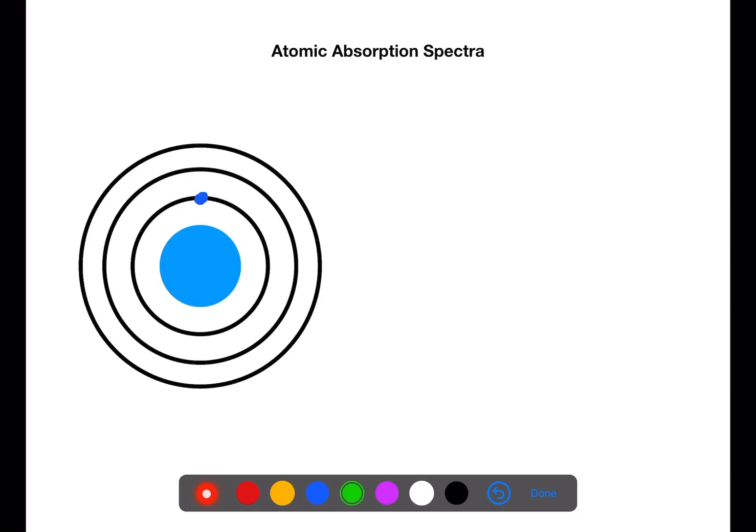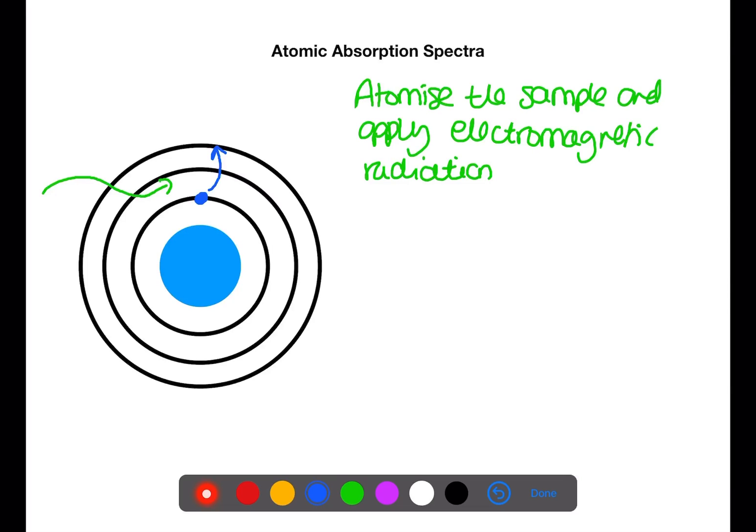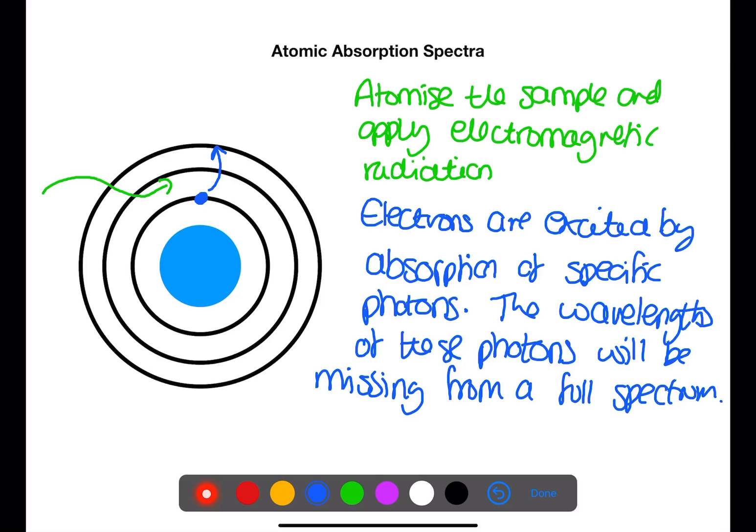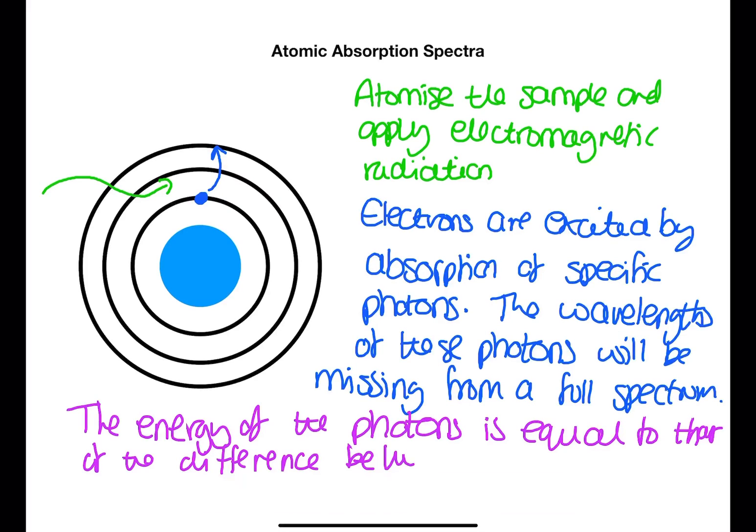In atomic absorption spectra the sample is atomised and electromagnetic radiation is applied. This excites electrons to higher energy levels by absorption of specific photons. Their wavelengths will be missing from a full spectrum. Specific wavelengths are absorbed which have energy equal to the difference between the levels.